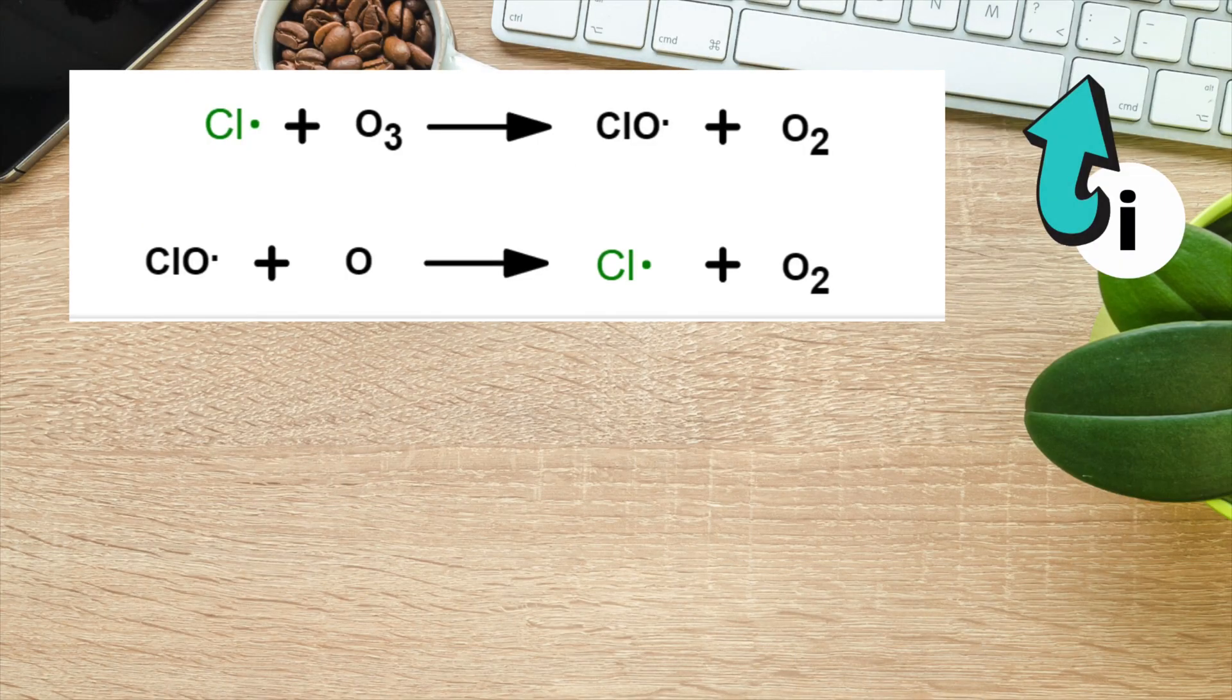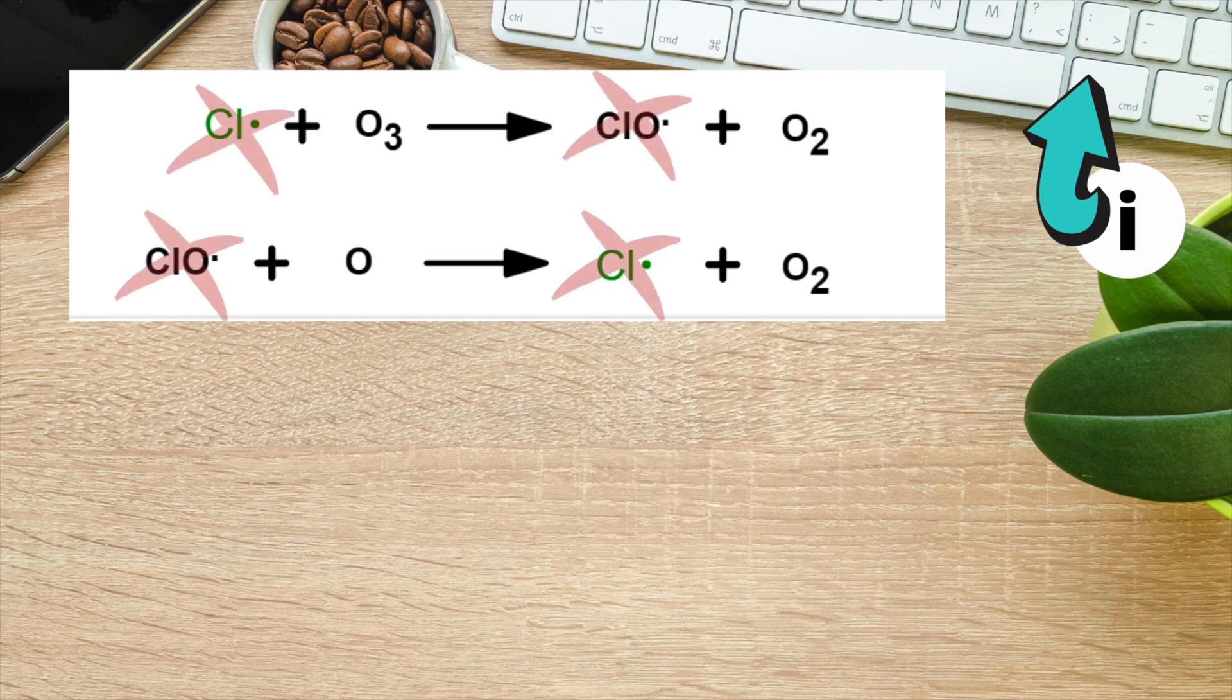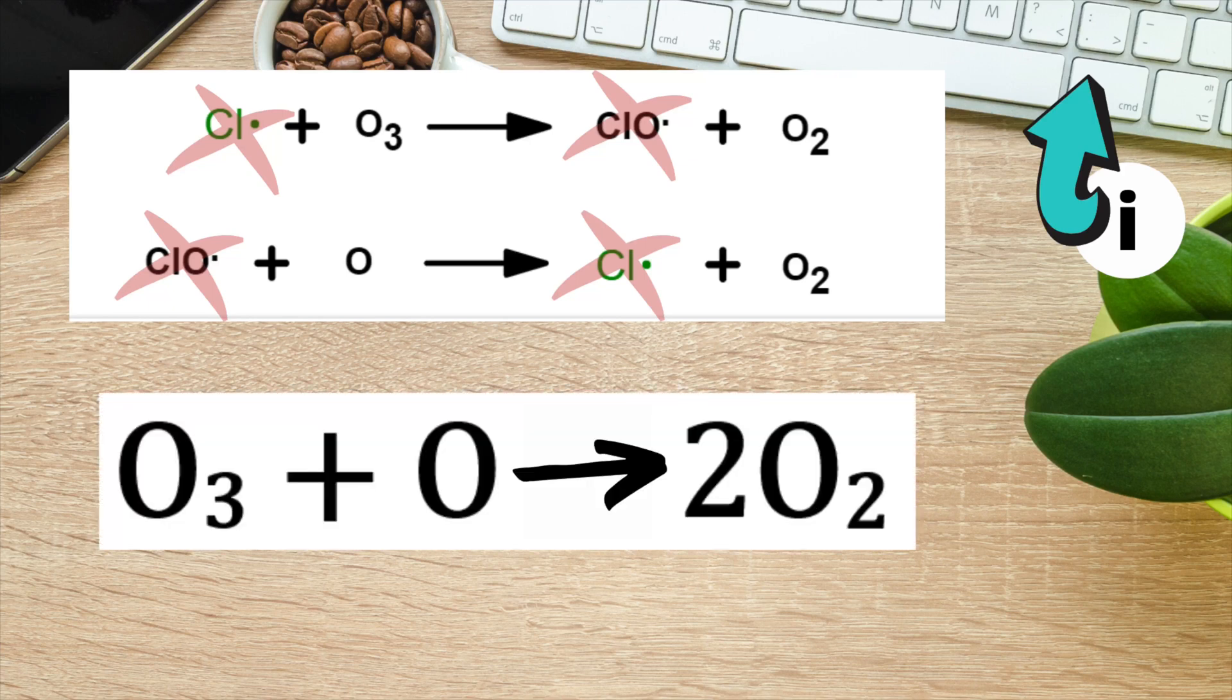These final two propagation-style equations can actually be combined to give an overall equation which shows the depletion of ozone in the upper atmosphere. This equation is different from the natural ozone equilibrium that we saw in an earlier slide. To combine the equations, we first need to cancel down anything that appears to be the same on both sides. Here you can see that our remaining resulting equation shows O3 reacting with a single O atom to form two oxygen molecules.